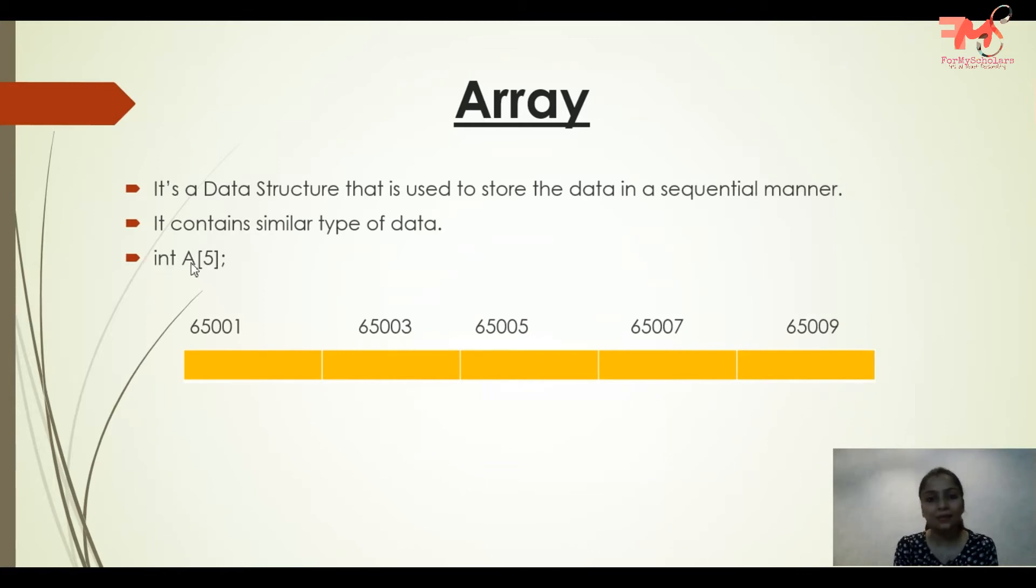See, here the address I've written is 65003 - why? Because integer takes how many bytes? Two bytes. So the first data stored in the first block will need two bytes, and the next value will come at the third byte. This is how it works.